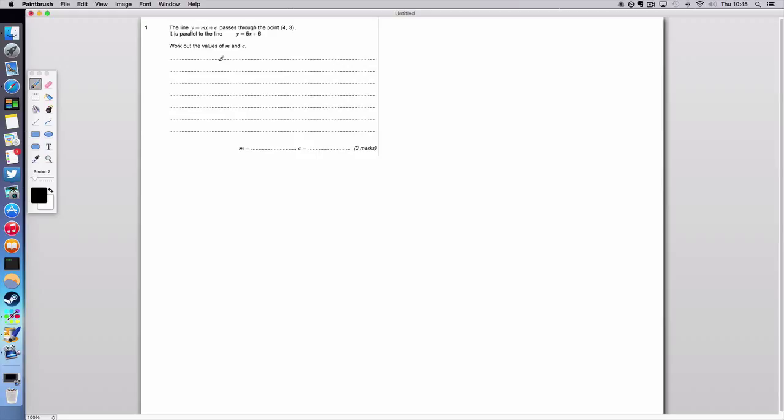So the line y equals mx plus c passes through the point (4,3). It is parallel to the line y equals 5x plus 6. Work out the values of m and c.